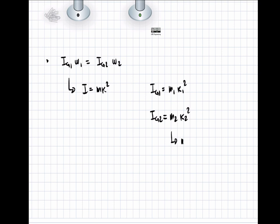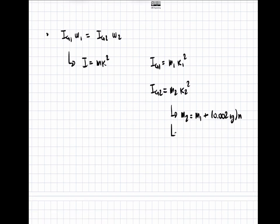But we can say that m_2 equals m_1, which is the initial mass, plus the mass of each paper clip times the number of paper clips, 0.002 kilograms times n. And we can say the same thing for k. k_2 equals k_1, the original, plus the contribution due to the paper clips, 0.0003 meters times n.